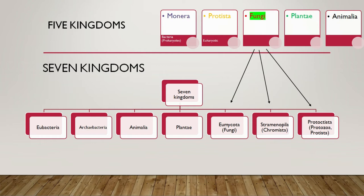You can also see that Eubacteria and Archaebacteria, which were in kingdom Monera earlier, are both prokaryotes. But now we know how they differ from each other, so it has been necessary to create different kingdoms — one for Eubacteria or true bacteria and one for Archaea.